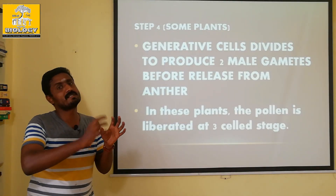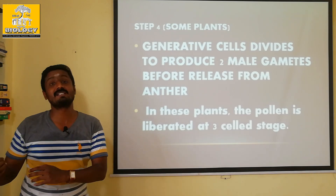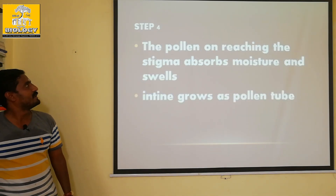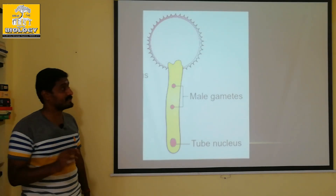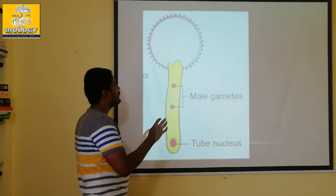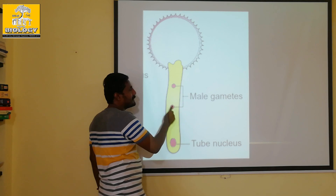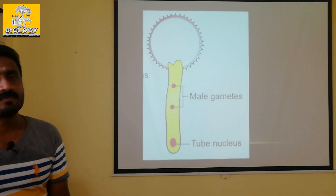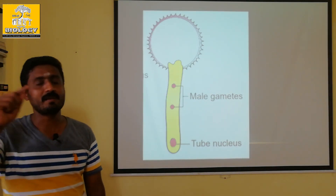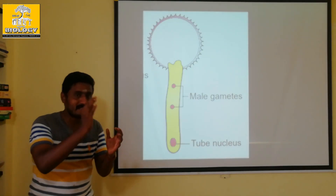This is the second step — produce a new cup from the 3-cell stage. Now, in the 2-cell stage, we have a stigma. In the tube nucleus, the male gametes are produced. In 40% of the plant, the pollen grains are produced.